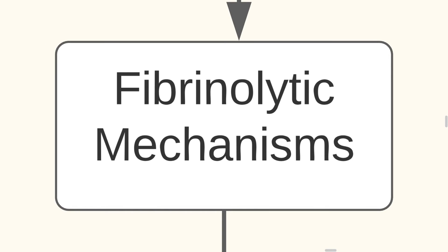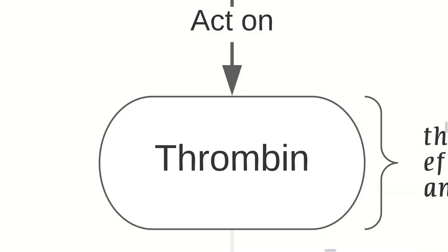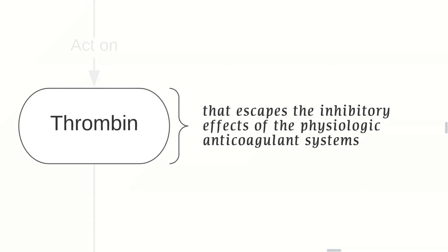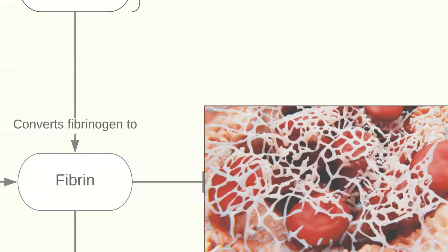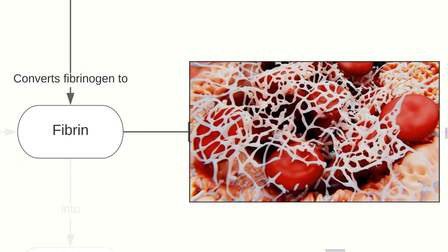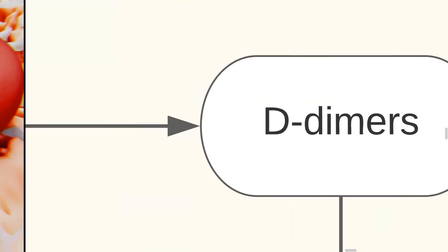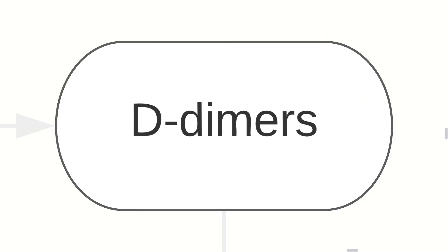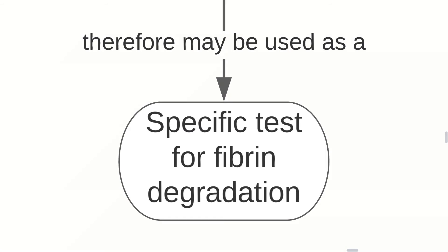Now let's turn our attention to fibrinolytic mechanisms. They act on thrombin. Thrombin that escapes the inhibitory effects of the physiologic anticoagulant systems converts fibrinogen to fibrin, as you can see in this picture here, which creates D-dimers and therefore may be used as a specific test for fibrin degradation.